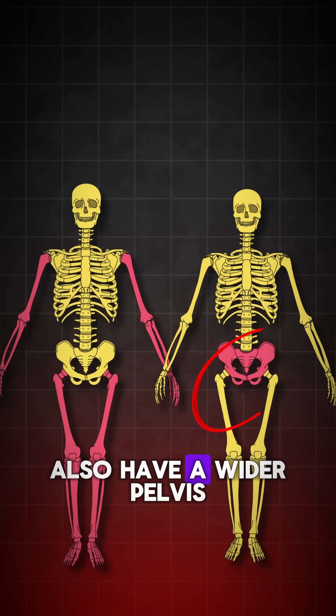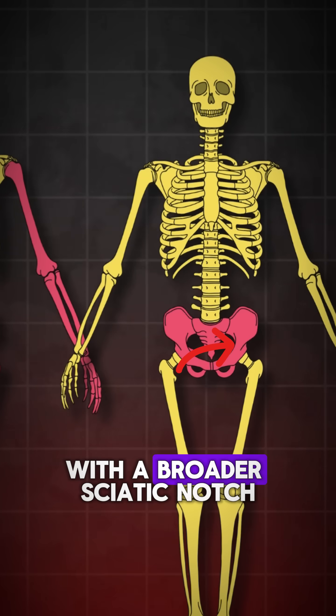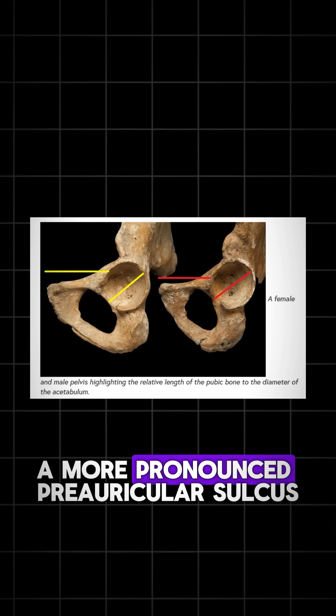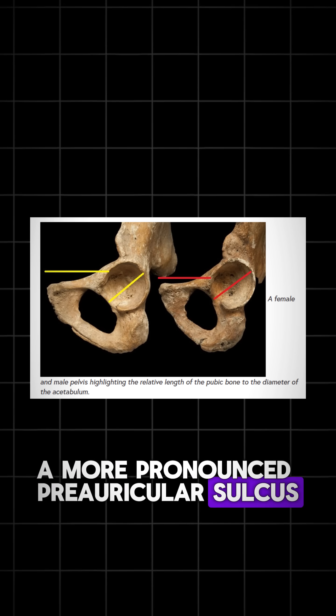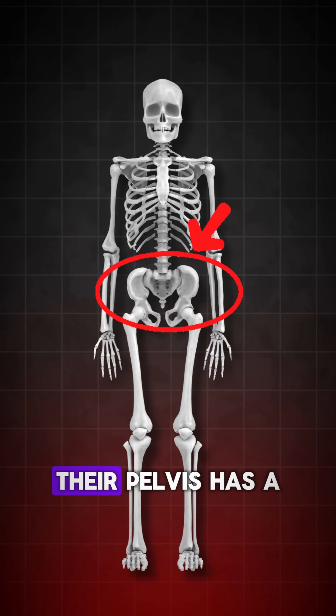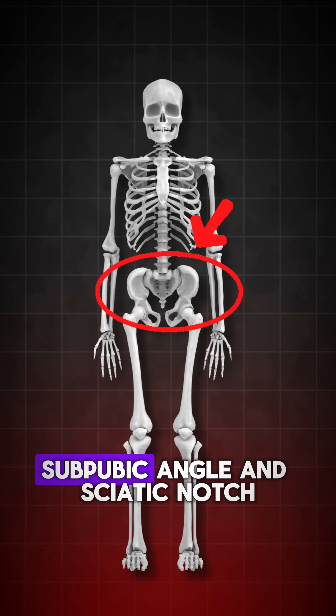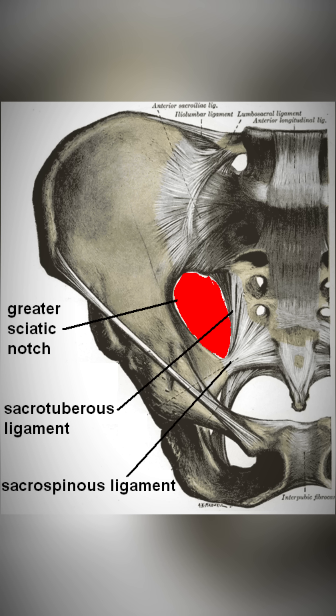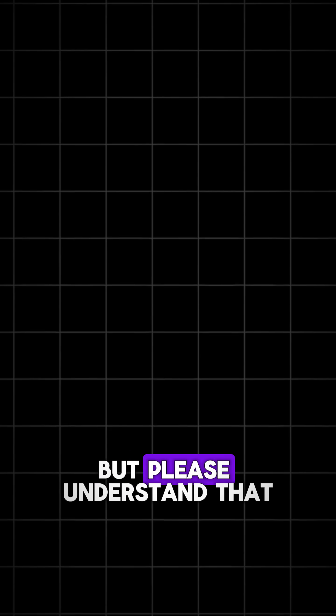A female tends to also have a wider pelvis with a broader sciatic notch, a more pronounced preauricular sulcus, and a pelvic inlet that is wider for childbirth. As for males, their pelvis has a narrower pelvis, subpubic angle and sciatic notch, and it is more robust.